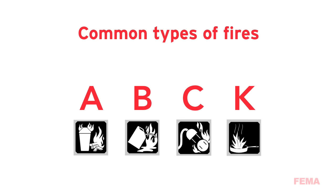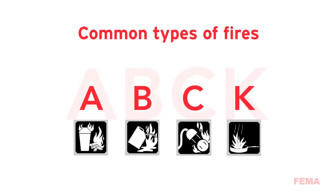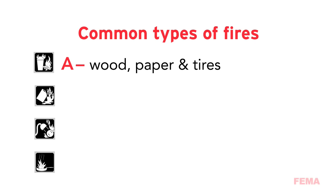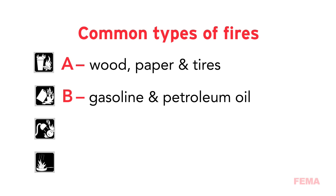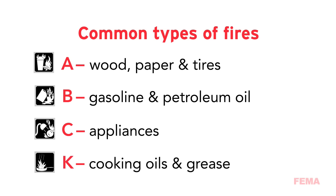Most common classes of fires are A, B, C, and K. Class A fires involve common combustibles like wood, paper, and tires. Class B fires involve flammable liquids like gasoline and petroleum oil. Class C ratings involve energized equipment for things that are plugged in, like appliances, computers, televisions, and electric machinery. Class K fires involve cooking oils and greases like vegetable fats.